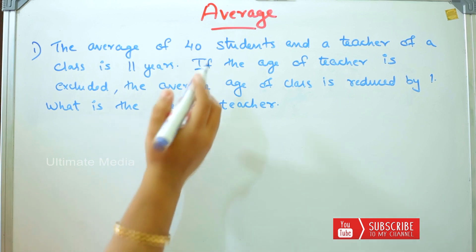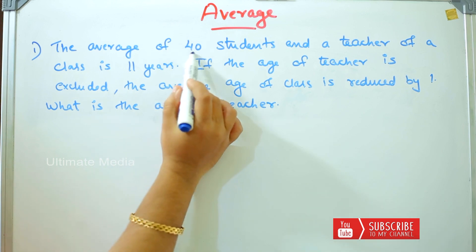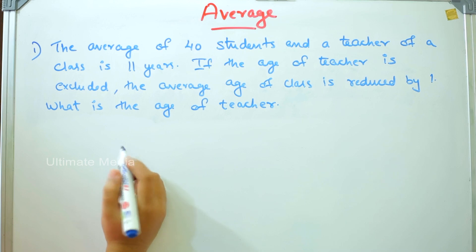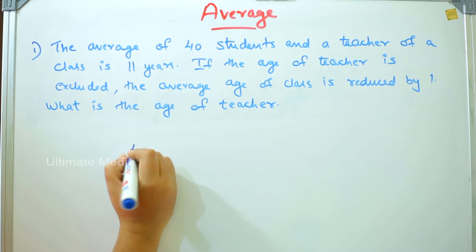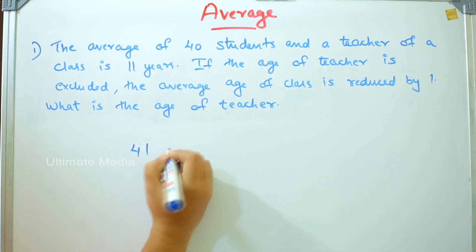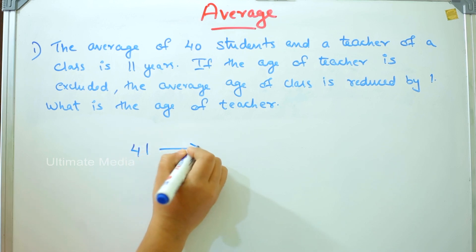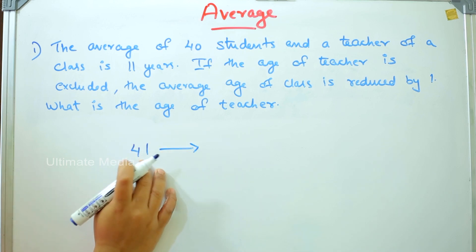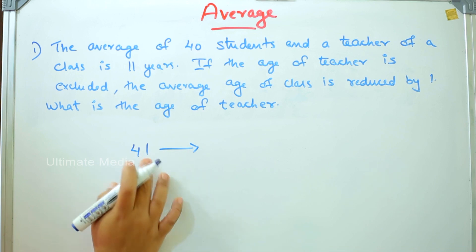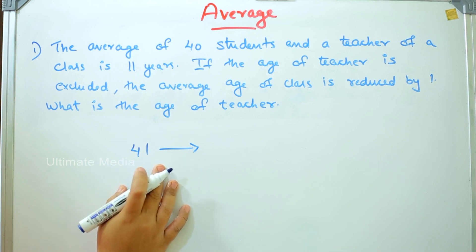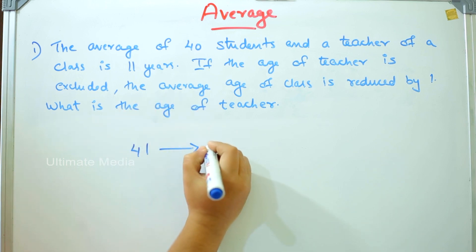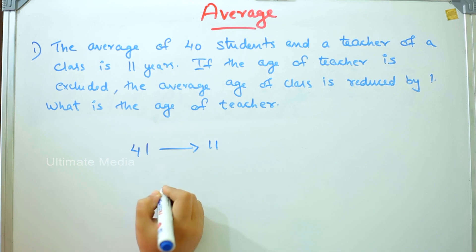We have 40 students and one teacher, making 41 persons. The average of these 41 persons is 11 years.